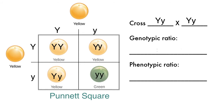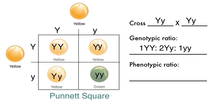What the Punnett square does is allow us to predict the probability of an offspring having a particular genotype, and therefore a particular phenotype. From this Punnett square, we can predict that there is a 1 in 4 chance, or 25%, that this cross will result in a homozygous dominant offspring; a 2 in 4 chance, or 50%, that it will result in a heterozygous offspring; and a 1 in 4 chance, or 25%, that it will result in a homozygous recessive offspring. These are the genotypic ratios, also written as a 1 to 2 to 1 ratio.